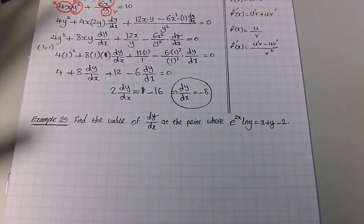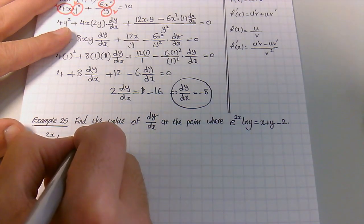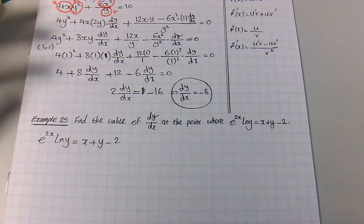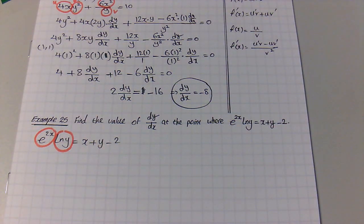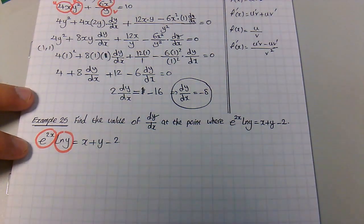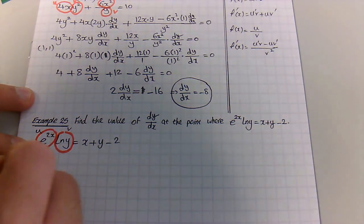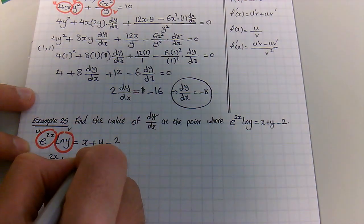Now let's move on to the last question, example 25. Find the value of dy/dx at the point (1, 1) given e^(2x)·ln y = x + y − 2. We will need the product rule again since e^(2x) and ln y are multiplied together as one term. The chain rule could be used for e^(2x) but you have practised it enough to differentiate it directly as 2e^(2x).